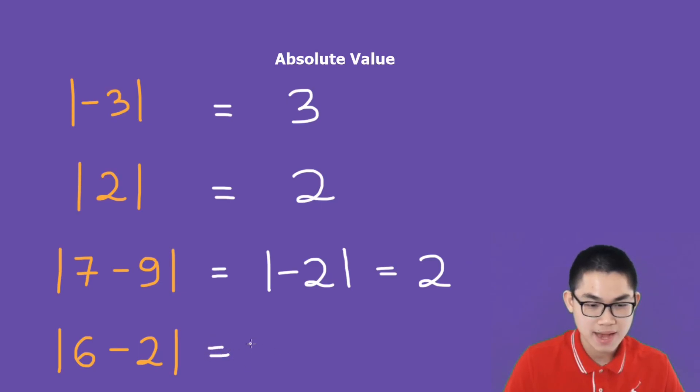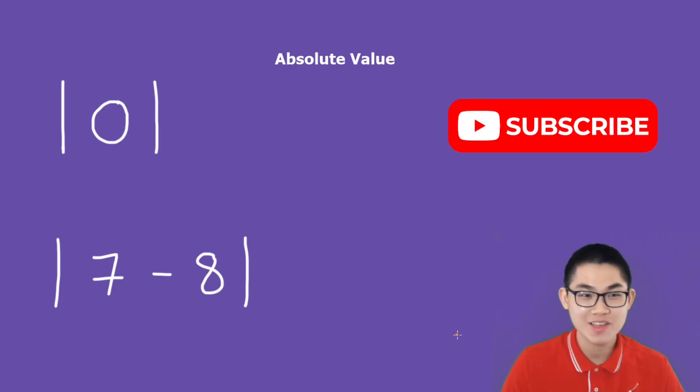How about 6 minus 2? That's 4, and the absolute value of 4 is also 4. What is the absolute value of 0? The absolute value of 0 is also 0.